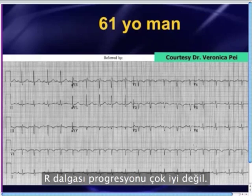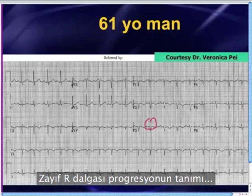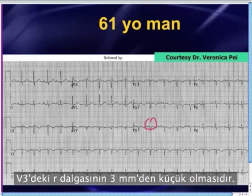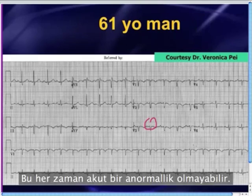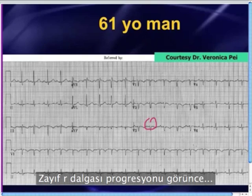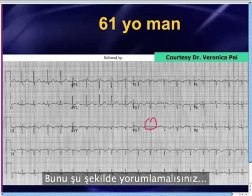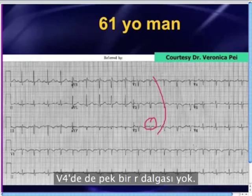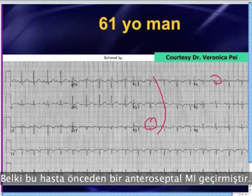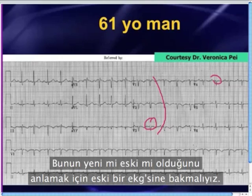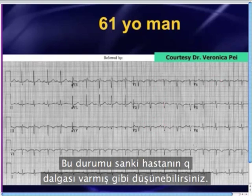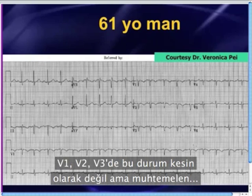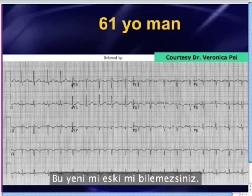What else do you have? Well, you've got poor R-wave progression. Poor R-wave progression is defined as an R-wave in V3 which is less than 3 millimeters. That's not always an acute abnormality. When you see poor R-wave progression — R-wave in V3 less than 3 millimeters — the way you interpret that is possible old anteroseptal MI. In other words, this patient has lost his R-waves in the anteroseptal leads. There's not much of an R-wave out in V4 either, so maybe this guy has had a previous anteroseptal MI. You can look at that as Q-waves in V1, V2, V3 — that suggests, but doesn't guarantee, that he's had a previous anteroseptal infarct. But you don't really know whether that's new or not.